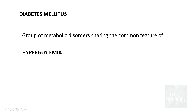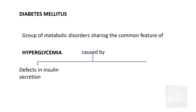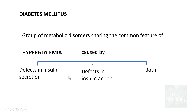Diabetes mellitus is defined as a group of metabolic disorders which share the common feature of hyperglycemia. This hyperglycemia is caused either by defects in insulin secretion, defects in the action of insulin, or a combination of both of these factors.